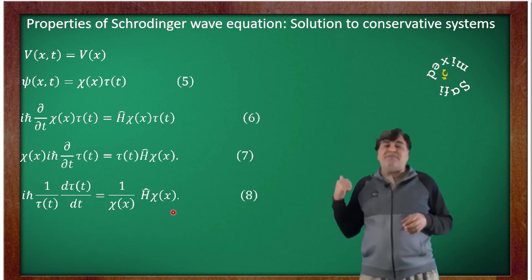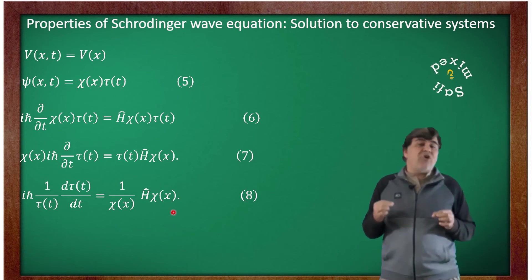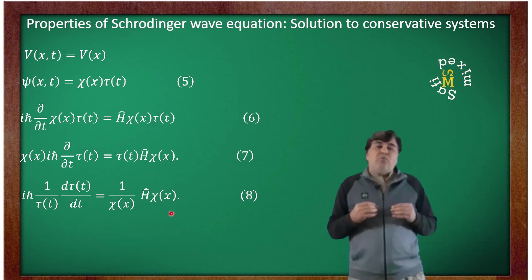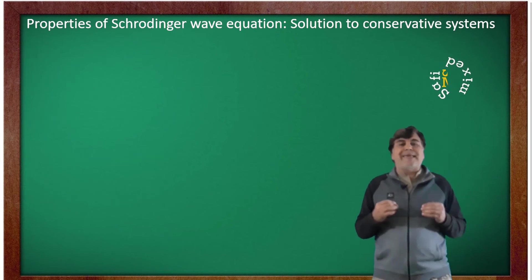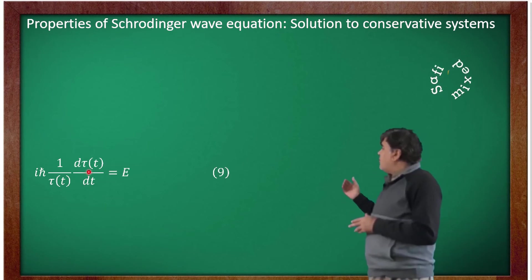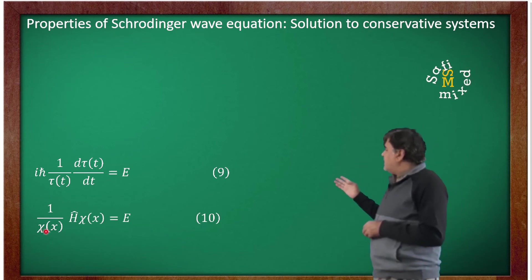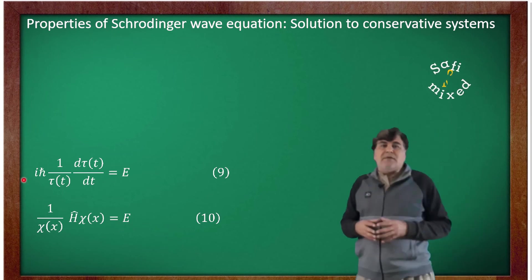This form of the equation is physically valid only if both sides are independently equal to a single constant, which I represent here by capital E. With this choice of constant, the above equation can be expressed as two independent equations: iota h-bar times one over τ(t) times d over dt applied to τ(t) equals E, and one over χ(x) times H applied to χ(x) equals E.